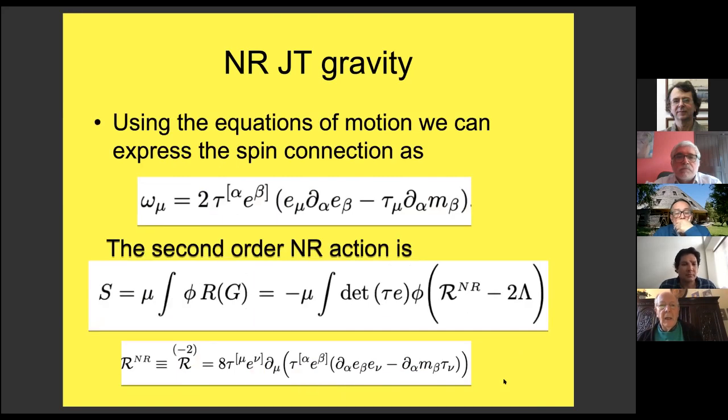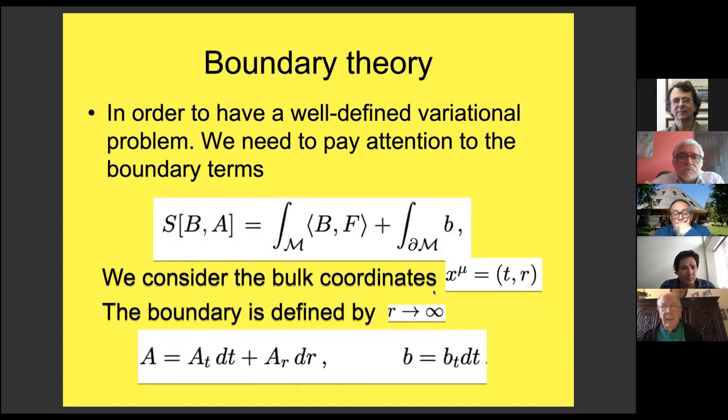If we do the equations of motion, this is first order and essentially we can use that the curvature of the spin connection equal to zero allows to isolate the spin connection in terms of the vielbein. In this way if we plug back on the action we get the second order form of the action where this expression here is the non-relativistic scalar curvature. That's the analogous if you wish of Jackiw-Teitelboim. There is some issue about the equivalence between the first and second order formalisms that I will not consider.